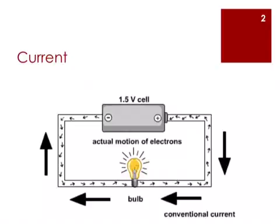An electric current is actually caused by the flow of electrons from a negatively charged terminal of the battery to a positively charged terminal of the battery. This is because electrons are repelled from the negatively charged terminal and attracted to the positively charged terminal. This movement is known as electron flow. Conventional current is opposite to electron flow.